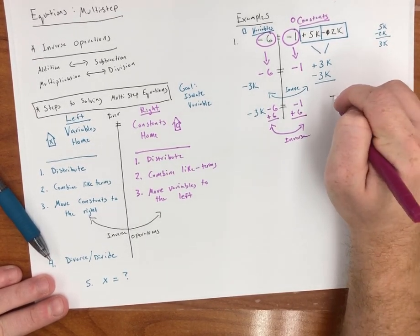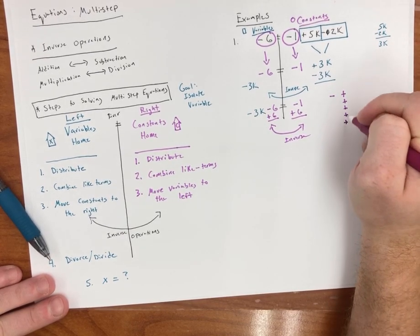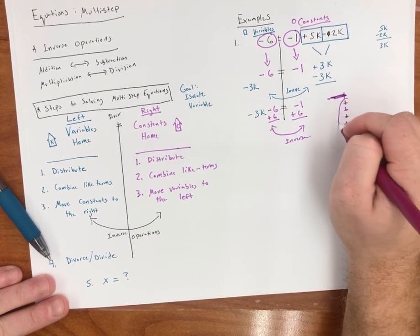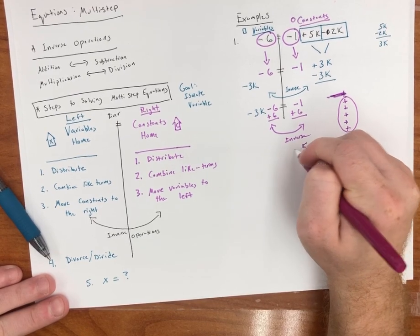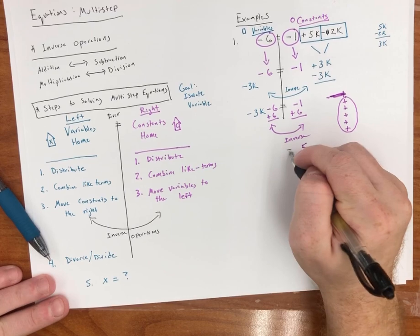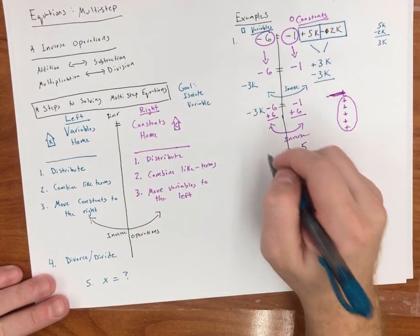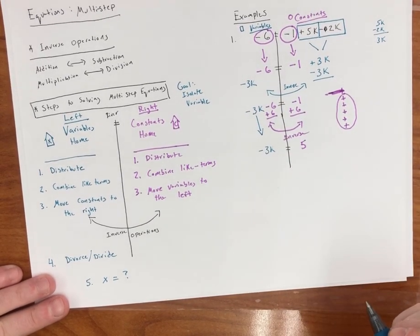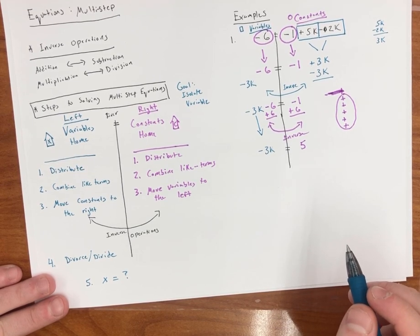Now, I have 1 negative and 6 positives. These cancel out. So how many positives do I have left? Positive 5. So 5 and then is equal to, remember we're still on our river, negative 3k. Because we just bring down our variable.